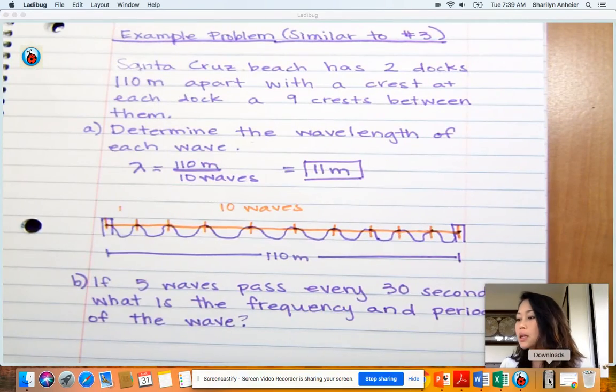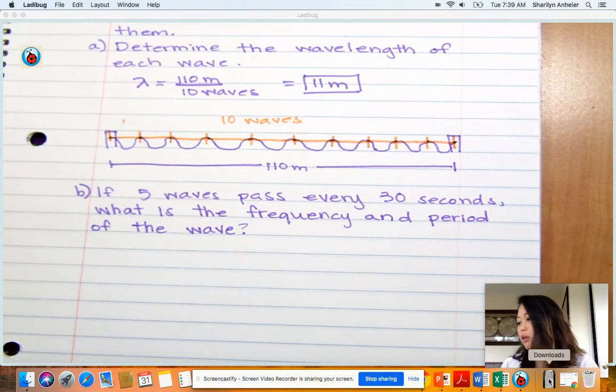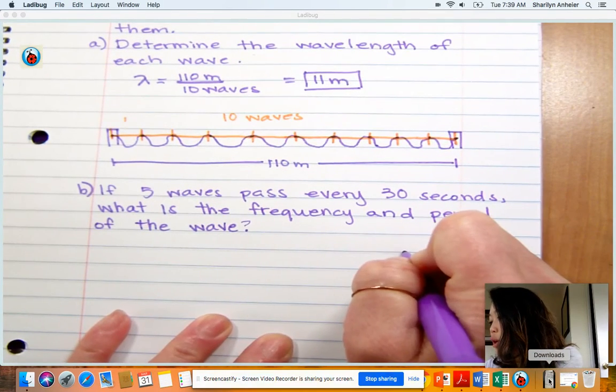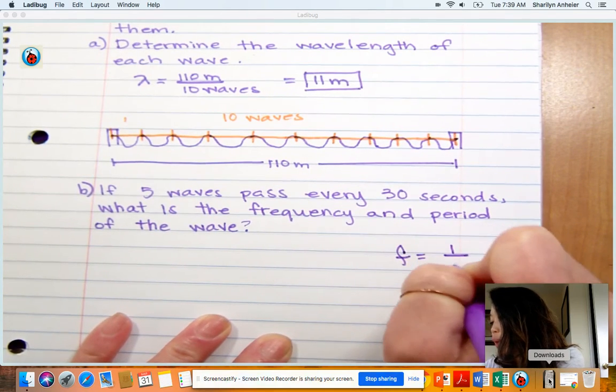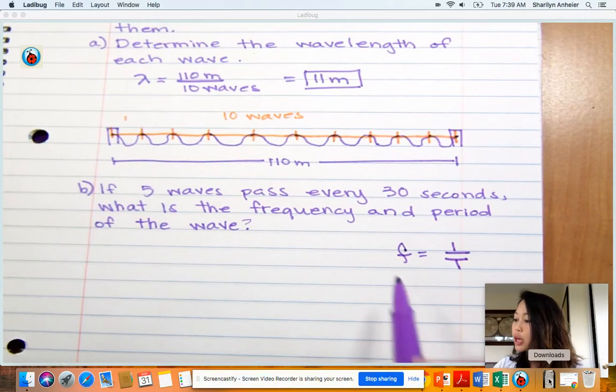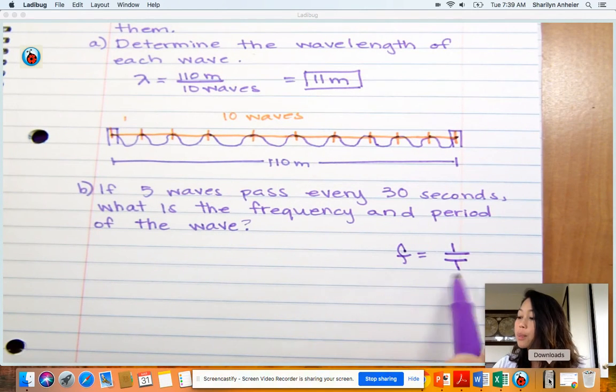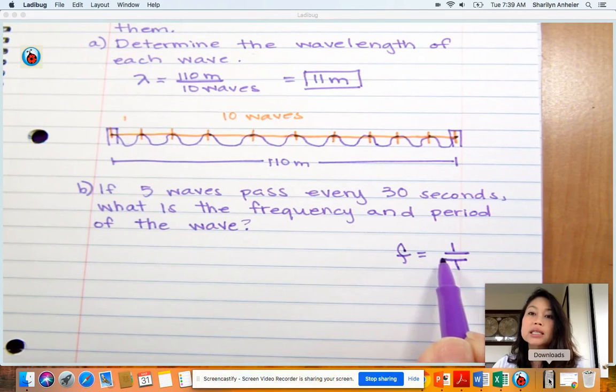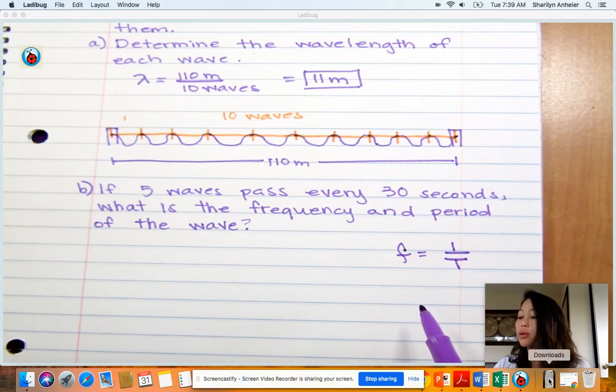Here's my screen again. For the next problem, it's asking us to find the frequency and the period. This is the equation in your physics helper: F equals one over period. The frequency is the number of waves that pass per second. The period is the time it takes for one wave to pass.